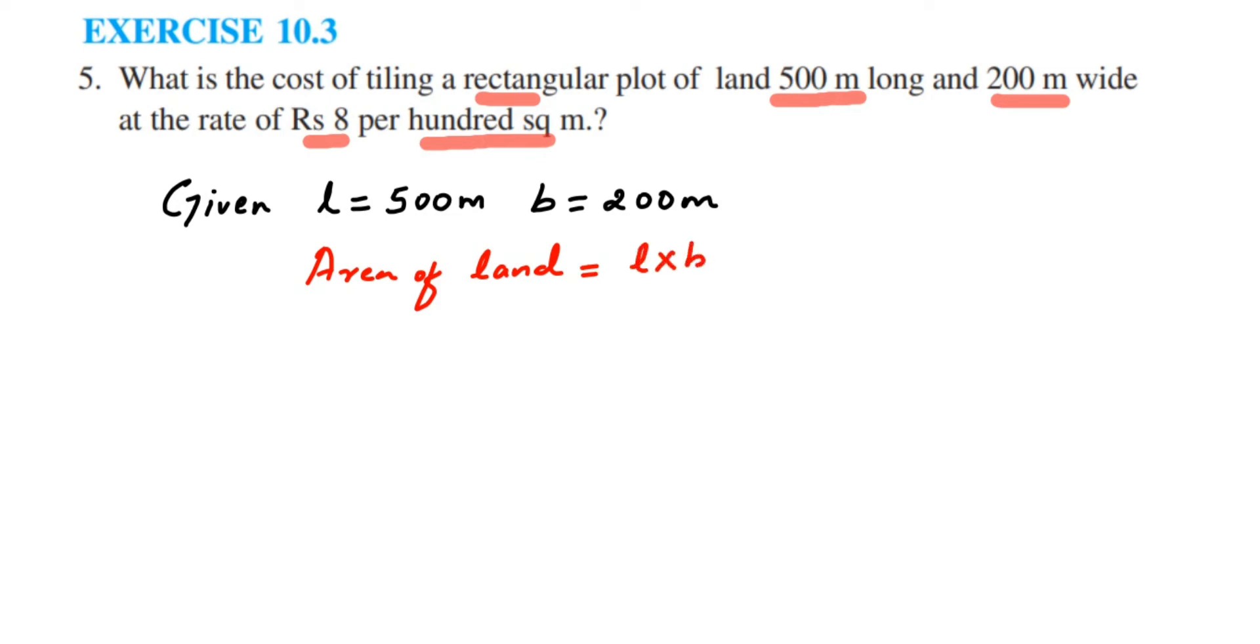Let us substitute the values. So length is 500 and breadth is 200. So 5 into 2 is 10 and followed by 4 zeros. So when you multiply here you actually get 1 lakh. So this is 1 lakh meter square. This is the area we got.